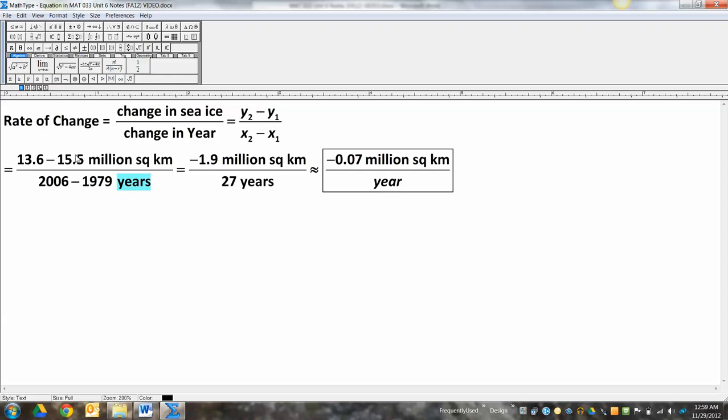And then you just use your calculator, right? You find 13.6 minus 15.5, or you can do it in your head, you know, as some would. And then you divide it by, you find what this is, right, subtract that, you get 27. And then you do that division with your calculator, negative 1.9 over 27.